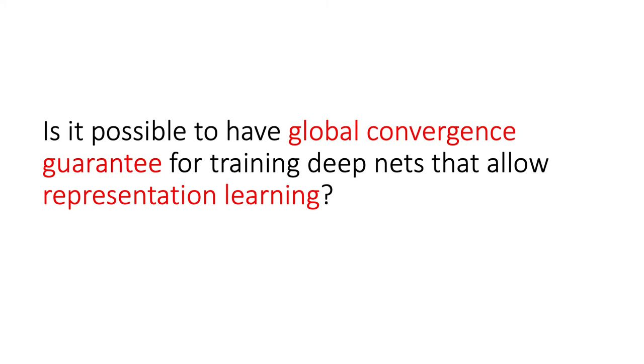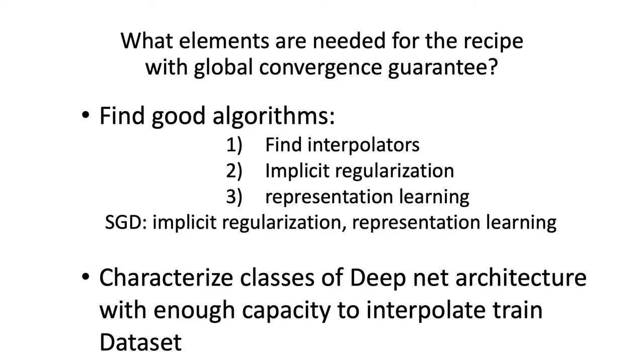So the natural question is, is it possible to have a global convergence guarantee for training deep nets that allow representation learning? If we think from first principle, the questions we should ask ourselves are, what elements are needed for the recipe with a global convergence guarantee?